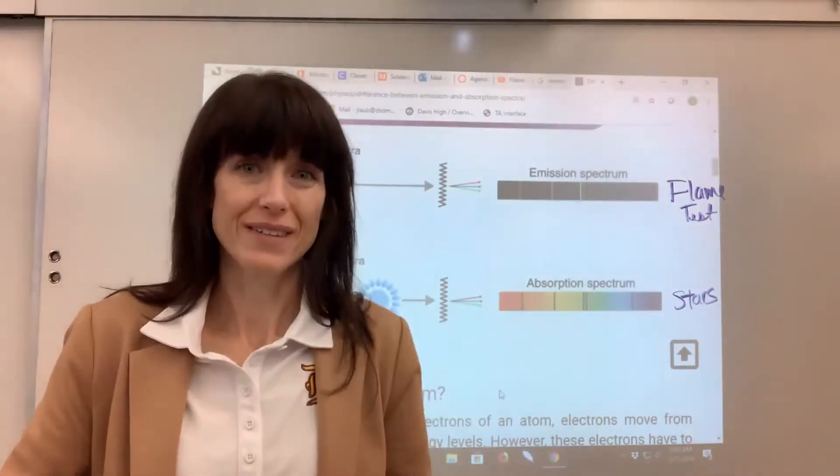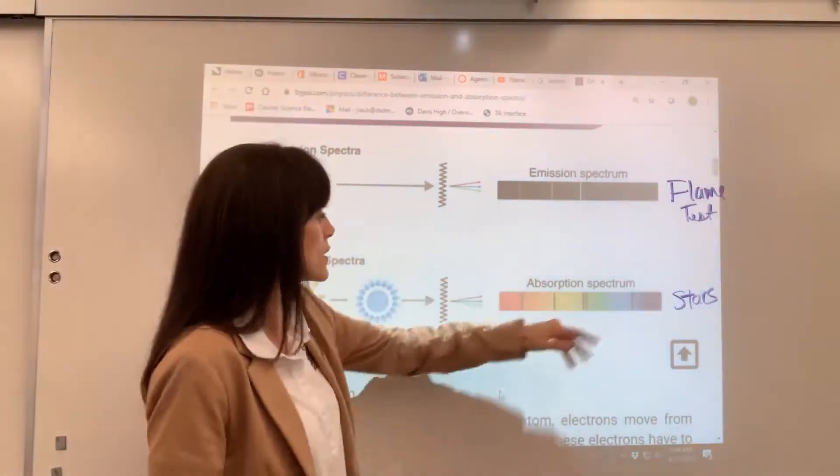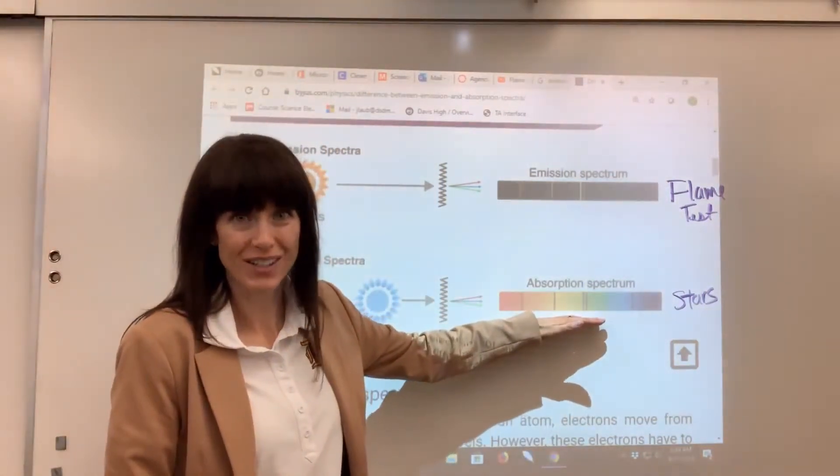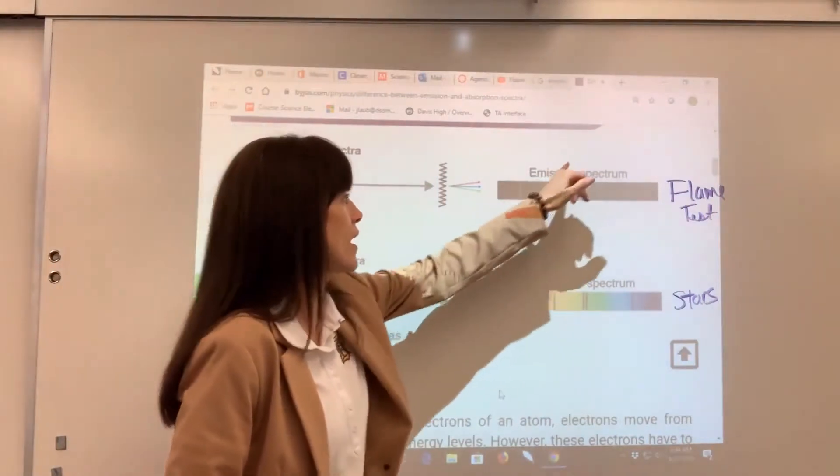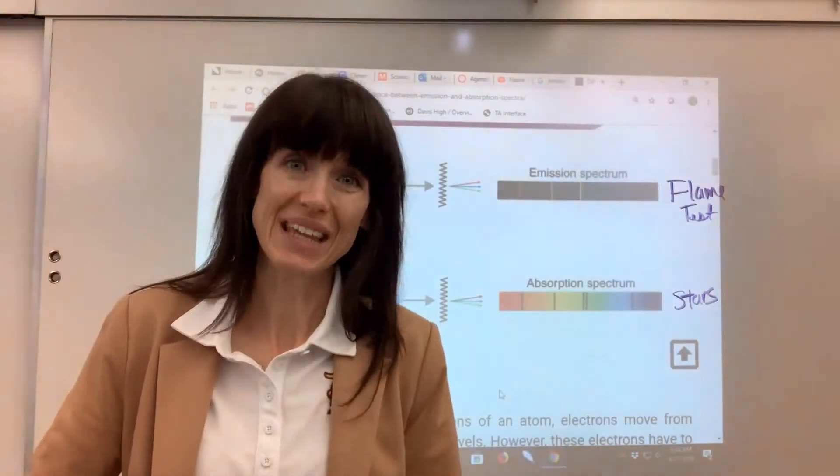A great majority of the sun is hydrogen. We see the emission or the absorption spectra of hydrogen because the four lines that we see in emission spectra perfectly fit. We also see helium.